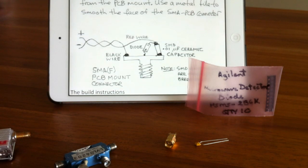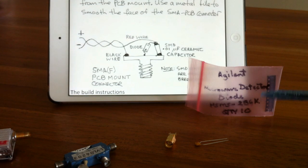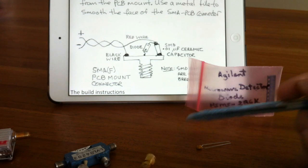To make a detector for measuring SWR, you will need the Agilent Microwave Detector HSMS-286K, a 0.01uF ceramic capacitor code 103, and an SMA connector like this one.